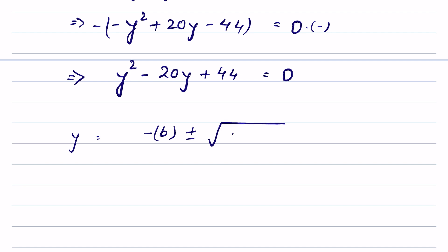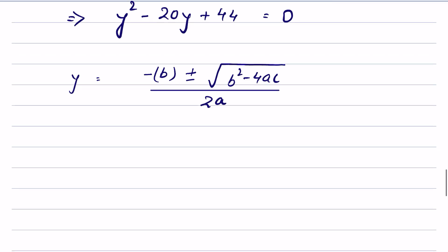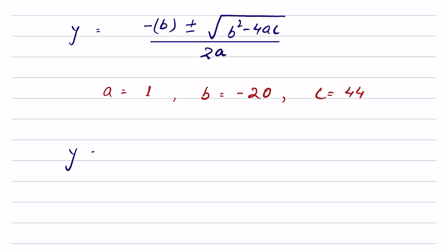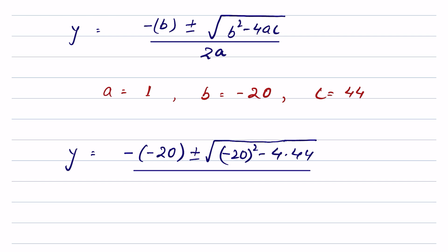Now to find the roots of this quadratic equation, we use the quadratic formula: minus b plus or minus the square root of b squared minus 4ac, all over 2a. Here a is the coefficient of y squared, which is 1; b is the coefficient of y, which is minus 20; and c is 44.